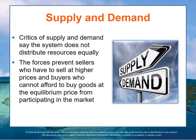So we ask ourselves: is this a fair process? Is this a reasonable way to determine for a society who gets what resources — who gets access to what resources? Certain critics of supply and demand say that the system doesn't really distribute resources equally. If you have more assets, you get more stuff. The forces of supply and demand prevent sellers who have to sell at a higher price — because their costs are high — from getting into the marketplace, and buyers who don't have enough money can't afford to buy goods at the equilibrium price, so they're not participating in the market and not maximizing their own well-being.